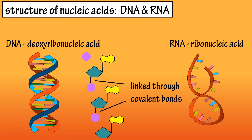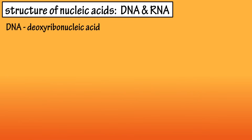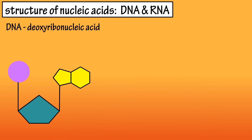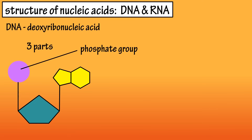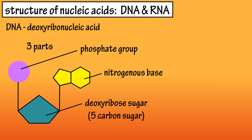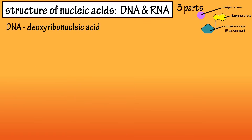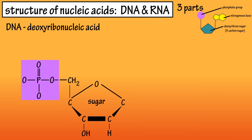Let's start by looking at DNA. The nucleotides that make up DNA have three parts: a phosphate group, a nitrogenous base, and a deoxyribose sugar, or 5-carbon sugar. The phosphate group consists of a phosphate bonded to four oxygen atoms, with one of the oxygens bonded to the number 5 carbon of the deoxyribose sugar.